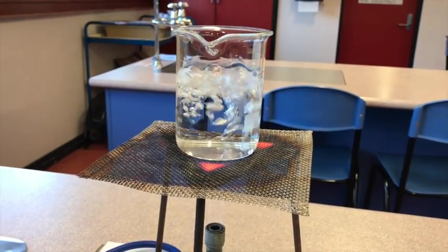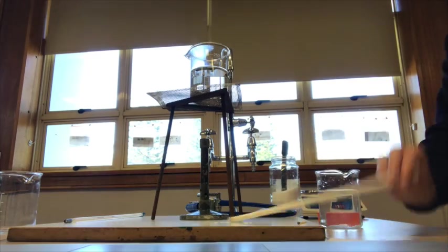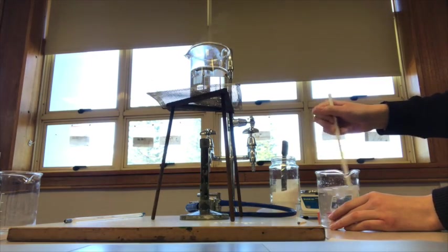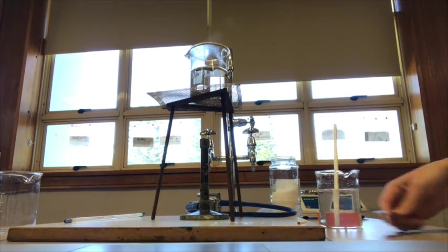When bubbles begin to appear, record the temperature in a table and turn off the gas. Whilst the beaker is cooling, fill another beaker with 200 milliliters of water and add 2.5 grams of salt into the beaker, stirring until the solute is completely dissolved.